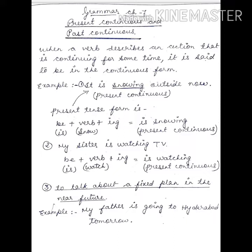We use present continuous in different forms, like to talk about a fixed plan in the near future. How can we put present continuous in this type of sentence? Let's have a look: 'My father is going to Hyderabad tomorrow.'